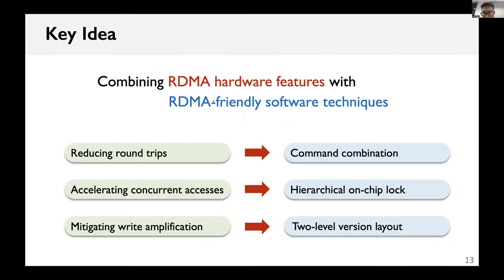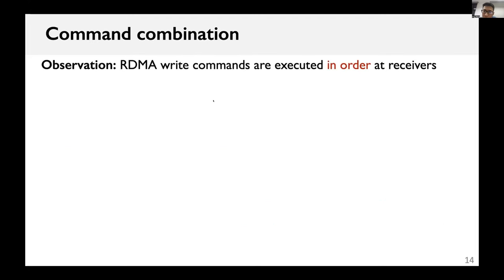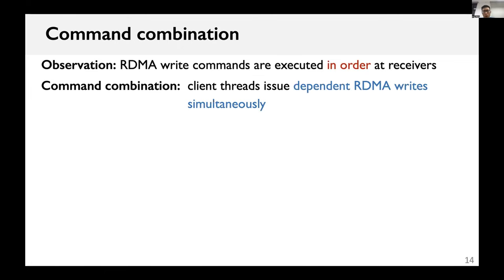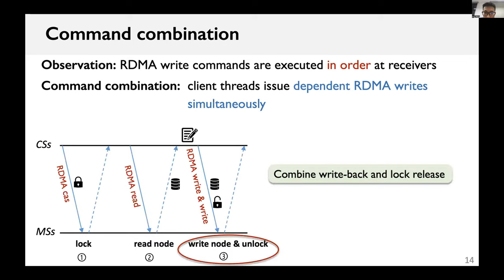Sherman combines RDMA hardware features with three RDMA-friendly software techniques to reduce roundtrips, accelerate concurrent accesses, and mitigate write amplification. We observe that RDMA provides a strong ordering property at the hardware level: RDMA read commands are executed in order at the receiver. Therefore, we introduce a command combination technique to Sherman, which lets client threads issue multiple dependent RDMA reads simultaneously. For example, when modifying a tree node, Sherman combines the write-back and lock release, thus saving one round trip.